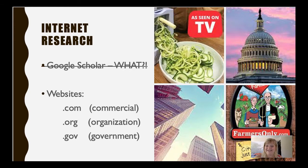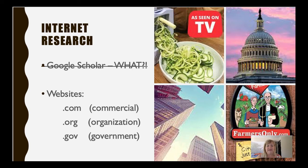Let's move on to internet research now that we've gone over Google Scholar. .coms stand for 'commercial,' and anyone with a few bucks can buy an online commercial space. The problem with .coms — which is not always the problem, but more often than not — is that they don't undergo the same rigorous process for publication as a .org, which stands for 'organization,' or .gov, which stands for 'government.' You could also find something published by a .edu, standing for 'education,' and that would also be peer-reviewed and have undergone a rigorous publication process.